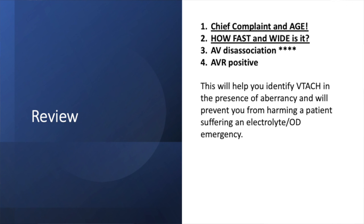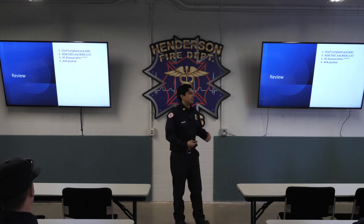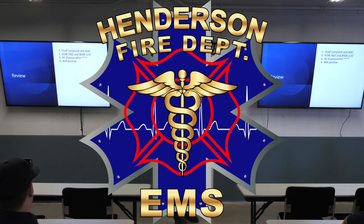In conclusion, remember this easy four-step process to identify wide complex tachycardias and treat with confidence. Step one: chief complaint and age — your highest indicator; you've already leaned which way. Step two: how fast and how wide — they have an inverse relationship. Very fast and just wide enough means arrhythmia; too wide and not fast enough means electrolytes or overdose. Step three: AV dissociation — correctly identify it and it's 100% accurate. Step four: if your patient is stable and you get the 12-lead, a positive AVR means the driving force is coming from the low ventricles — helping you identify VTAC. Thank you for your time.